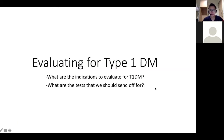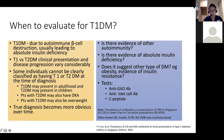The next question is about type 1 diabetes — what are the indications for evaluating for type 1 DM and what tests should we send off? Type 1 diabetes is really tricky to manage. It's due to the autoimmune destruction of the beta cells, leading to absolute insulin deficiency. But there's a considerable overlap between type 1 and type 2 in terms of clinical presentation, and the disease progression can also be very different. Type 1 can present in adulthood, and type 2 we increasingly see more in children.